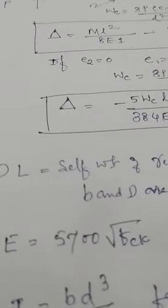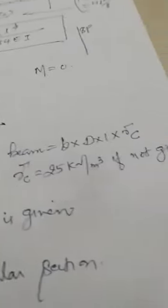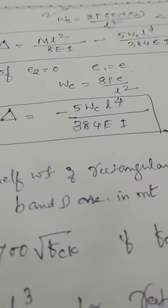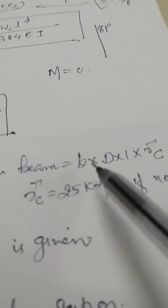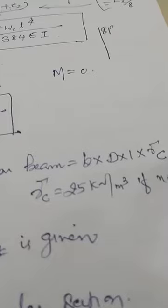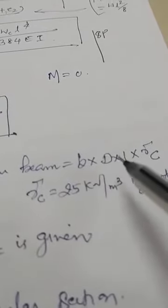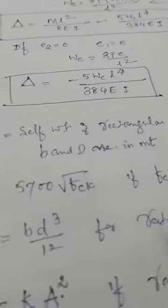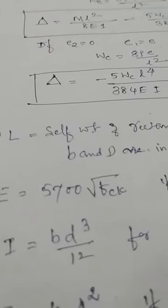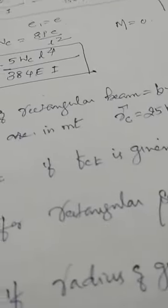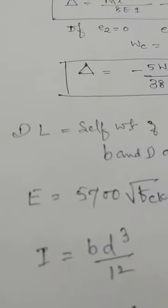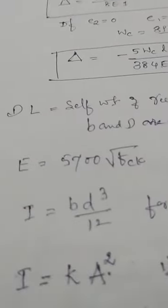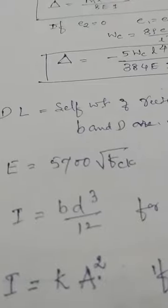For dead load deflection, this is again the UDL formula: 5WL⁴/(384EI). The dead weight is calculated as volume times density: b × d × 1 × density of concrete, where the unit length is in meters and density is in kN/m³, so b and d should be in meters. If Young's modulus E is not given but fck is given, use the formula E = 5700√fck. The moment of inertia is calculated as bd³/12.